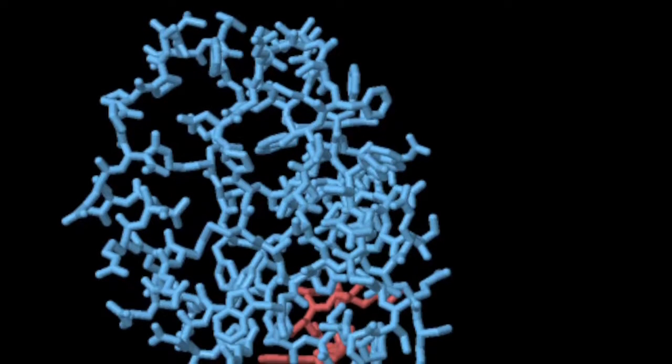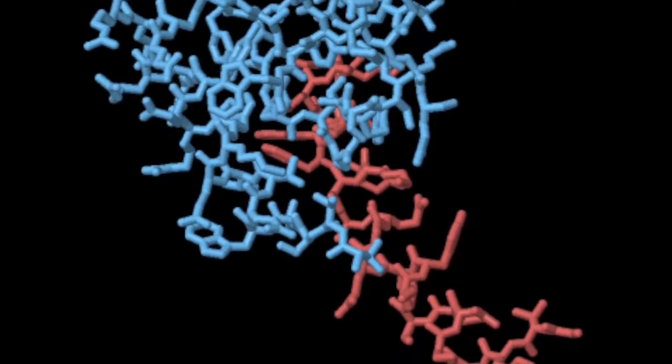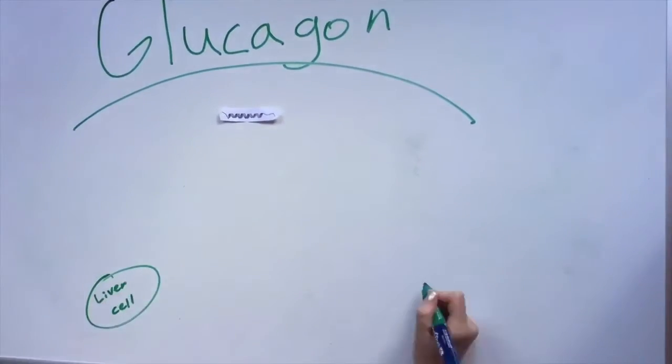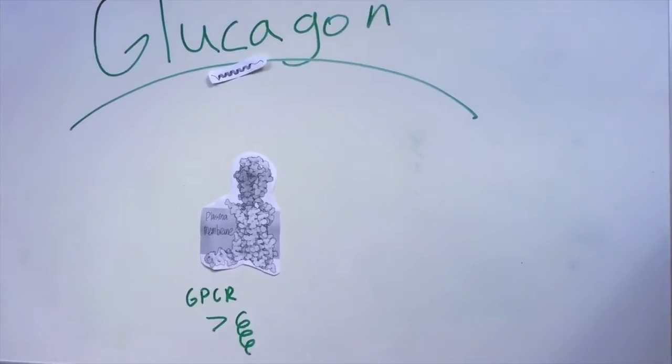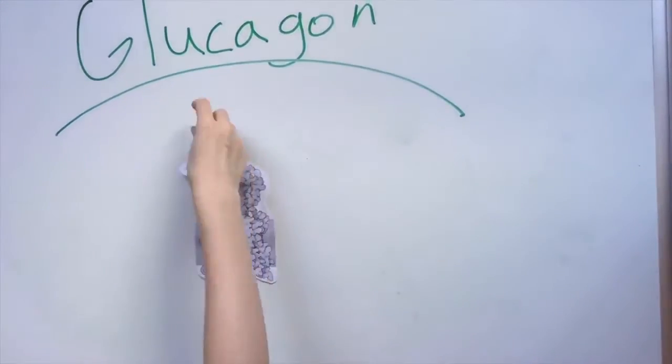The glucagon receptor is a modified G-protein coupled receptor consisting of seven alpha helices. The receptor has a transmembrane domain as well as an additional extracellular domain. This domain finds glucagon and traps it by binding to one end of the helix and delivering the other end to the transmembrane domain.